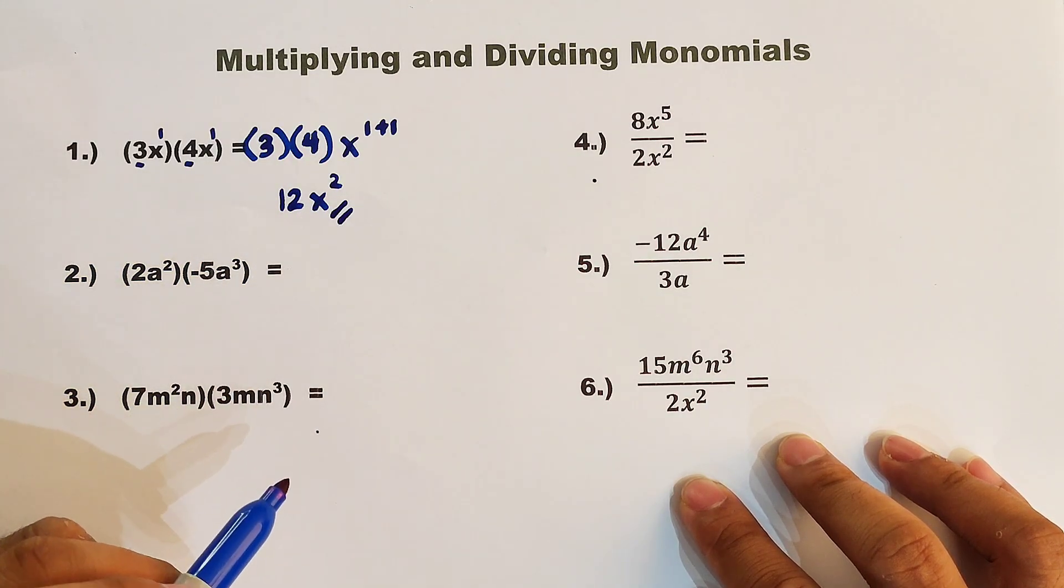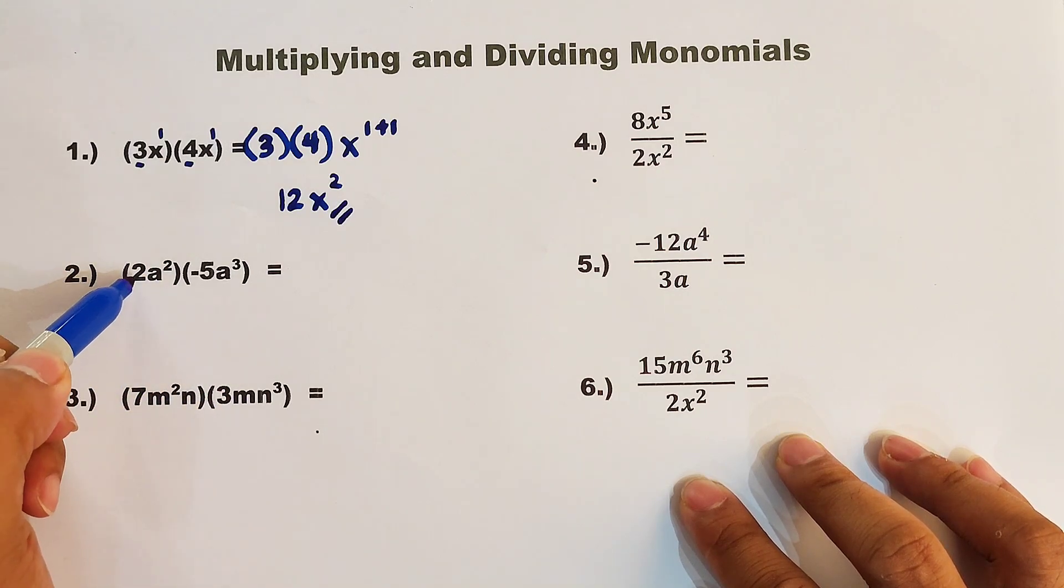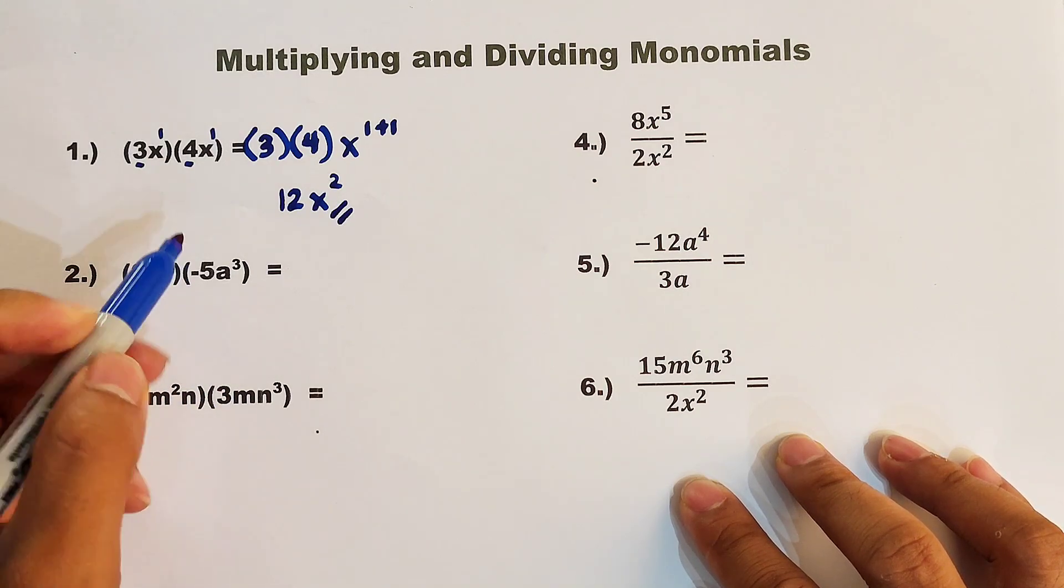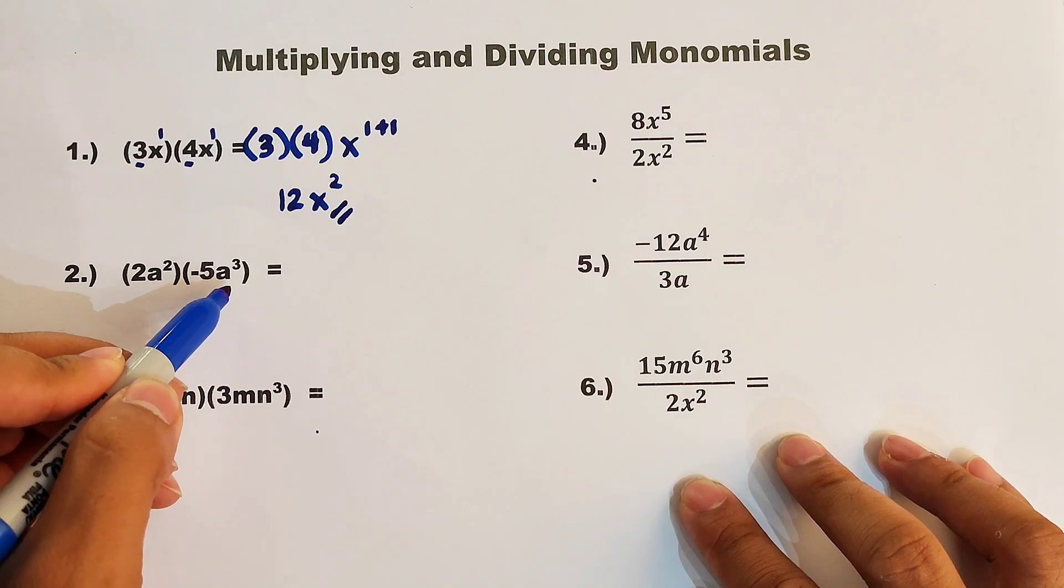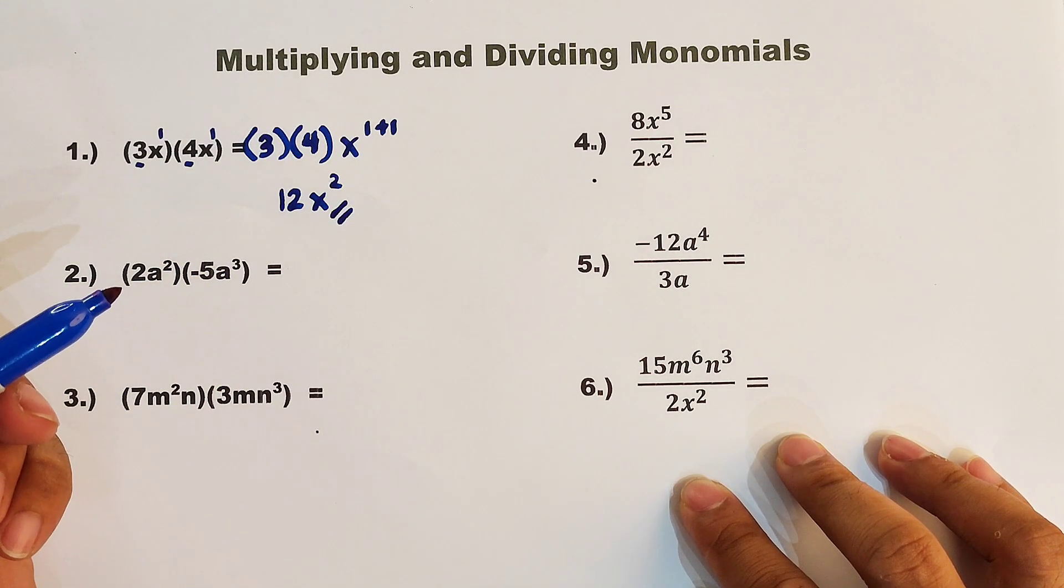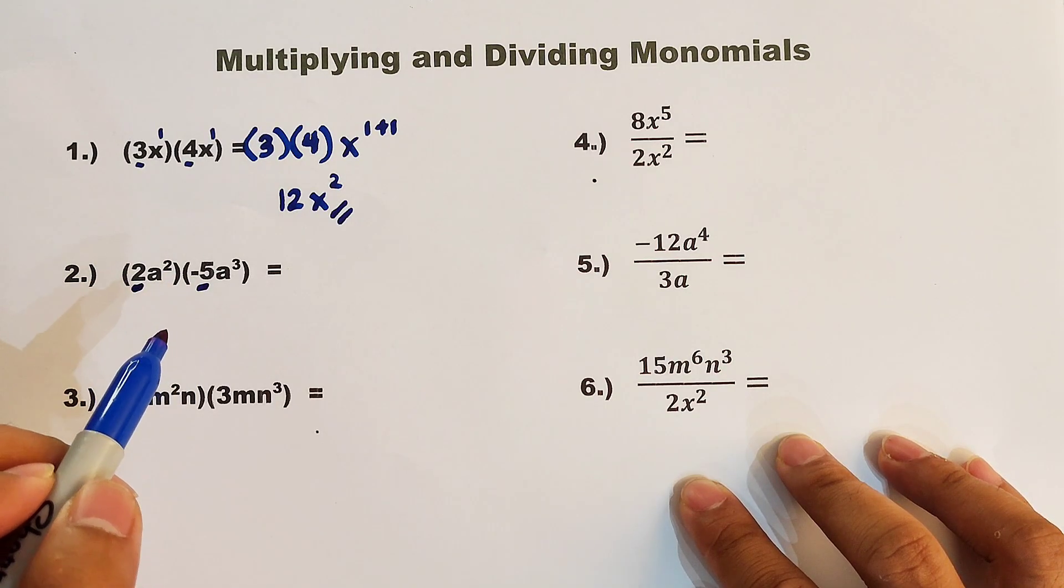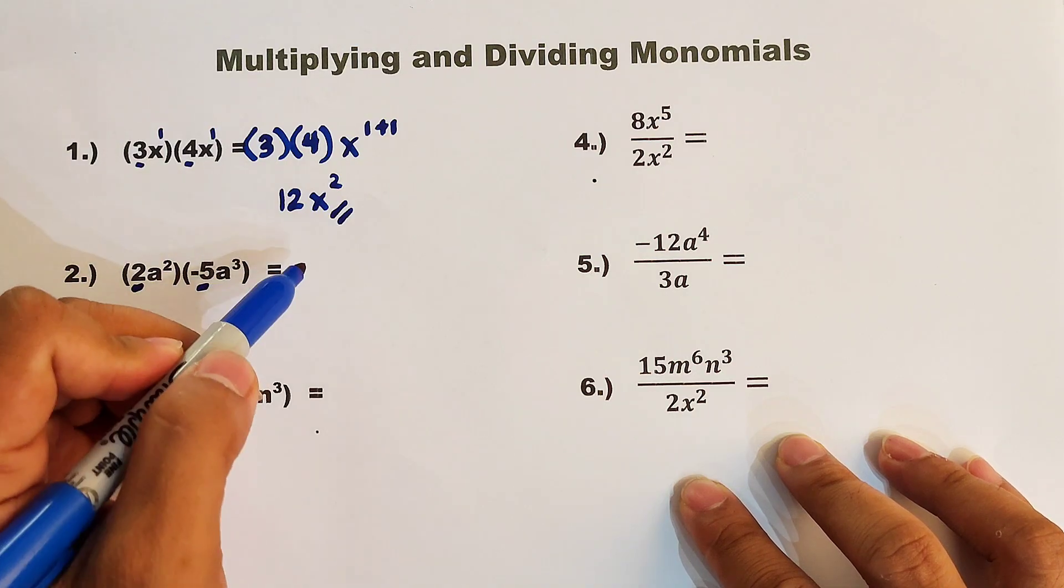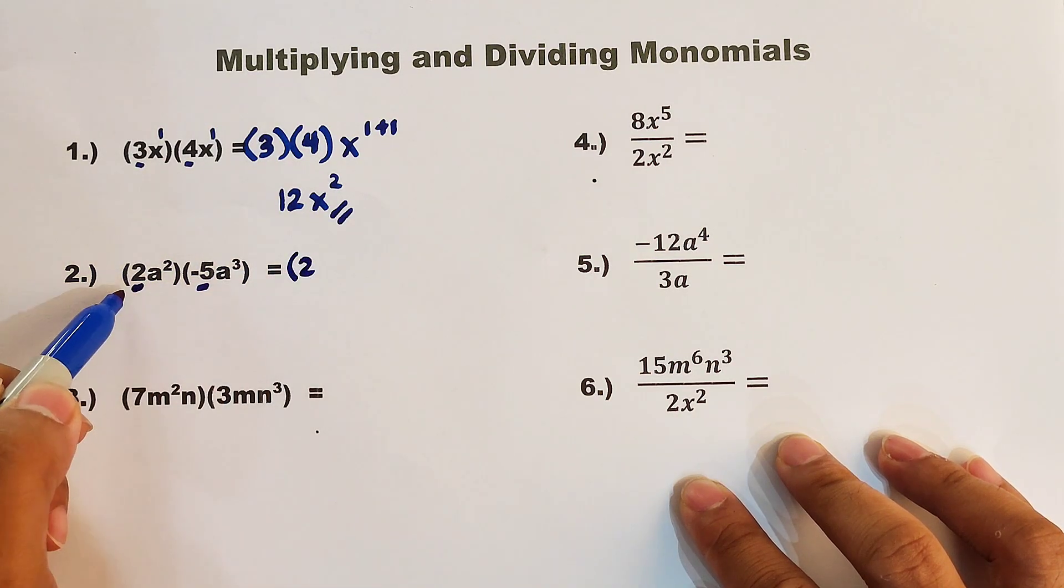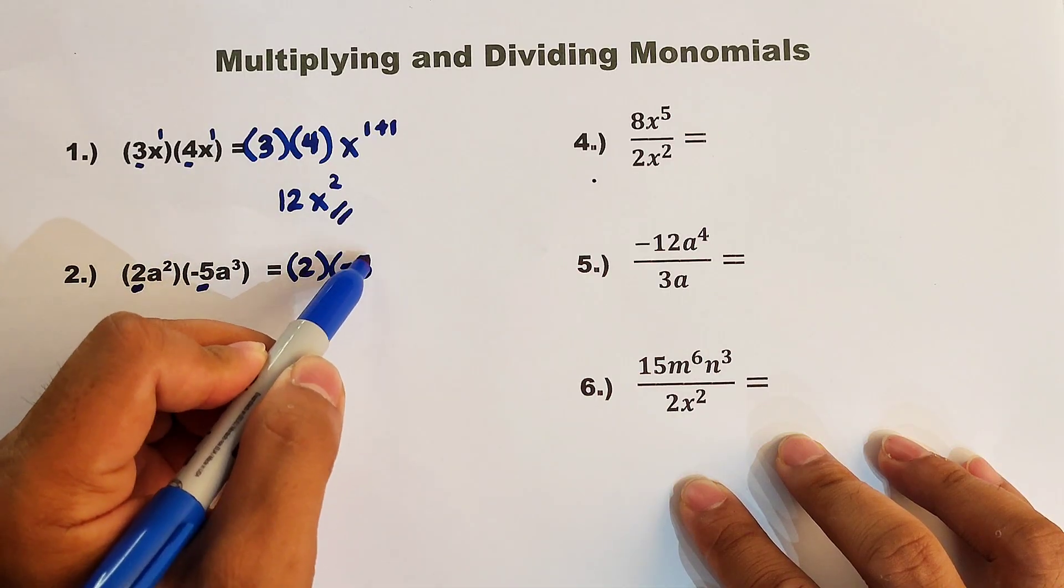Now let's continue with item number 2. In number 2, we are given 2a square times negative 5a raised to the 3rd power. Remember, as I have mentioned earlier, first thing is you need to multiply the numerical coefficients. We have the first, which is 2, and then the second one is negative 5.